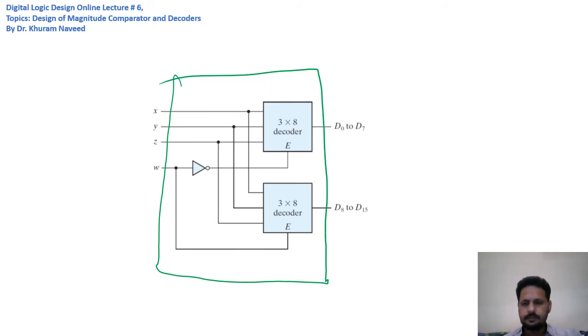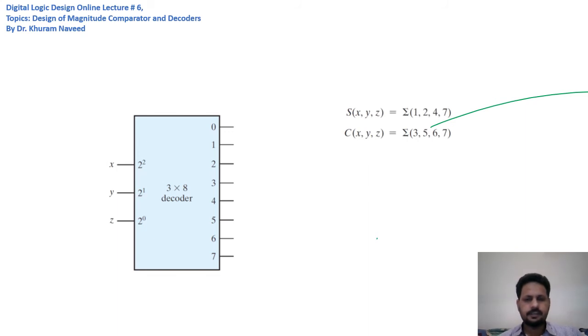Here we will see how we can make use of these decoders. One of their uses could be to implement various boolean functions represented in min terms, because this type of decoder outputs min terms. So if this is m₀, m₁,